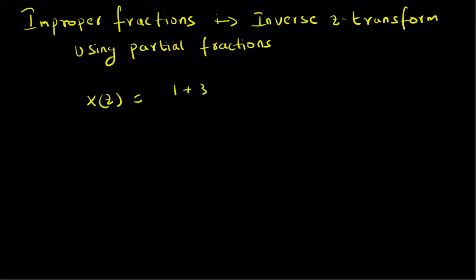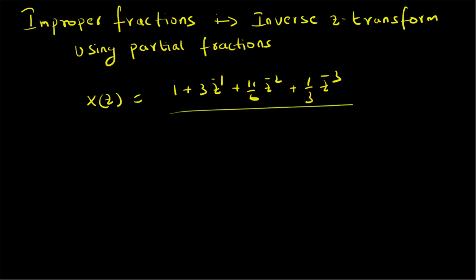The numerator is 1 plus 3z⁻¹ plus (11/6)z⁻² plus (1/3)z⁻³, and in the denominator is 1 plus (5/6)z⁻¹ plus (1/6)z⁻². By using the long division method, we can separate X(z) as two components: the first one is basically a non-fraction part and the second part is a proper fraction.